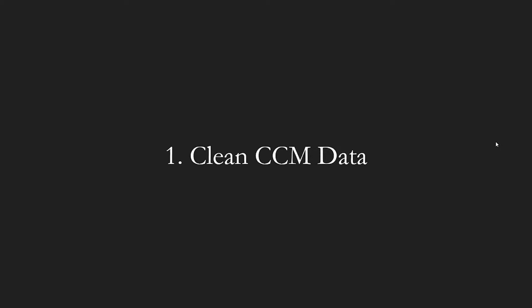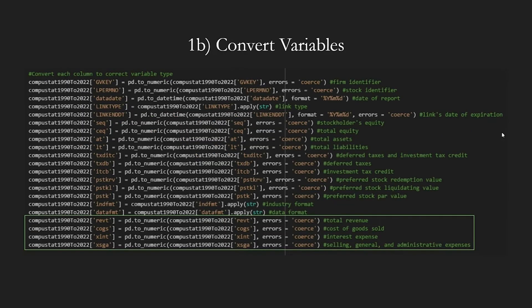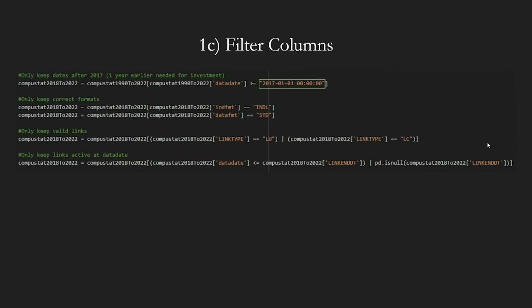The first five steps from connecting Google Drive to importing the CCM CSV file remain unchanged. Our first changes occur at step six when cleaning the ComputeStat data frame. When parsing the variables, we include four new columns for the new factors. Similarly, when converting variables, we include these four boxed columns — total revenue, cost of goods sold, interest expense, and selling general administrative expenses. When filtering our data, instead of just taking dates after 2018, we need all dates after 2017, since we need total assets from two years before reference dates to rank firms' aggressiveness.